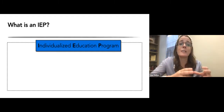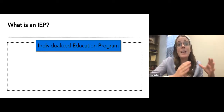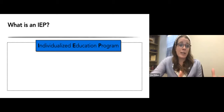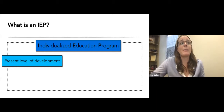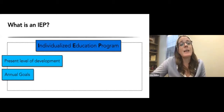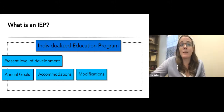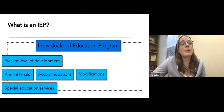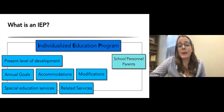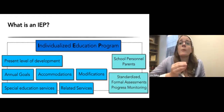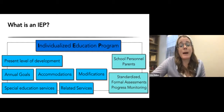It's really important to understand that the IEP is a legal document. Anything in there can be questioned in court. An IEP is made up of the present level of the student's development, their annual goals, accommodations, modifications, what their special education services are going to look like, and any related services that the team decides the child needs. School personnel and parents make up the IEP team, and you inform it with standardized formal assessments or progress monitoring data.